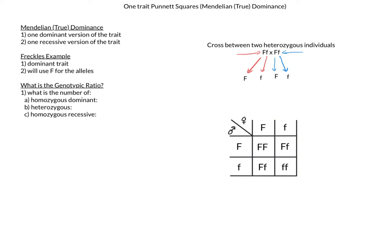If I look at my cross, I will see that there is one homozygous dominant indicated with two big F's. I have two heterozygous individuals that have both a big F and a little f, and I have one homozygous recessive individual that has two small f's. So my genotypic ratio comes out to be 1 to 2 to 1.